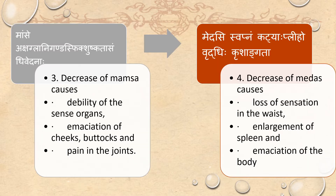Mamsa Akshaglani, Ganda, Shushkada, Sandhi Vedana. Decrease of Mamsa causes debility of sense organs, emaciation of cheeks and buttocks, and pain in joints.